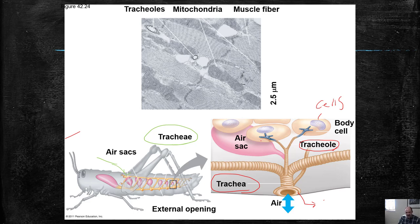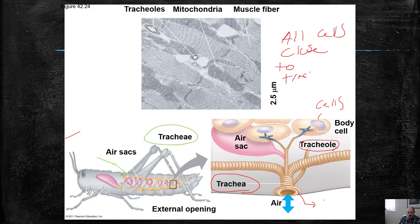Here's a cell of the body, and here are the tracheoles branched out around those cells. Practically every cell of the insect's body is close to part of one of these tracheoles, meaning they can easily have gas exchange delivered to all cells of the body. That's one of the ways insects accomplish gas exchange.